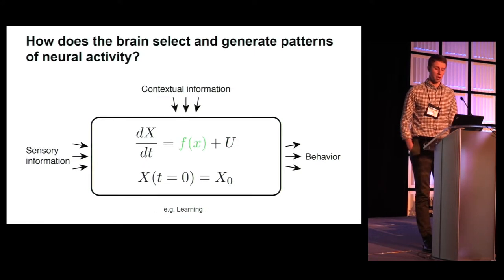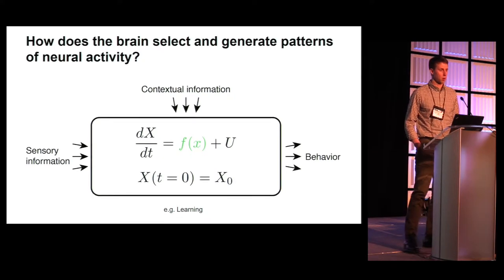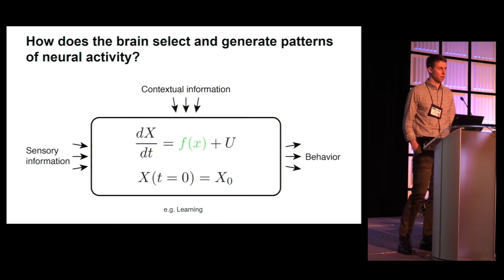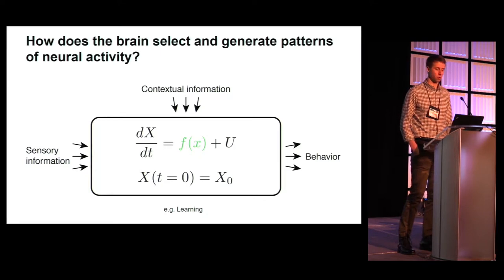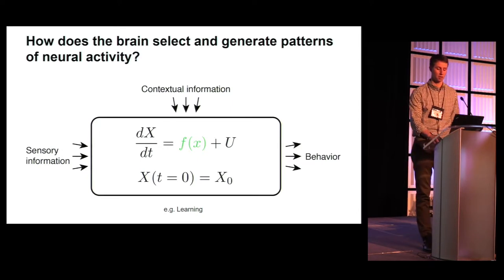Finally, changes can be made to the function f of x, which governs the inherent dynamics. For the purposes of this talk, I'll assume that f of x doesn't change on the fastest time scales with which sensory and contextual information can change. Instead, changes to f of x may capture changes in synaptic connectivity resulting from learning.